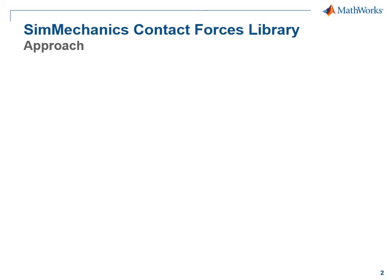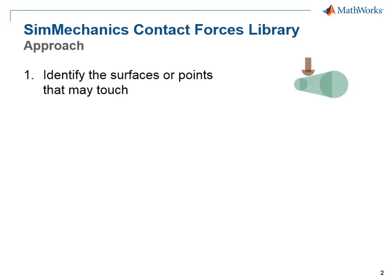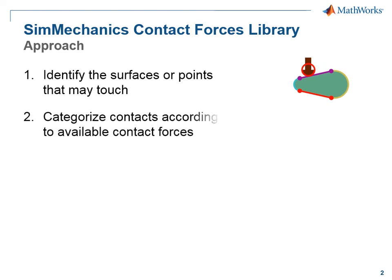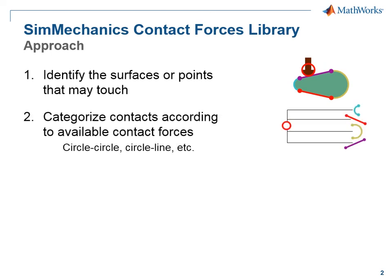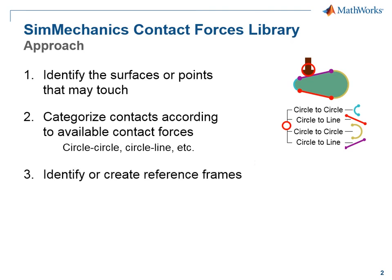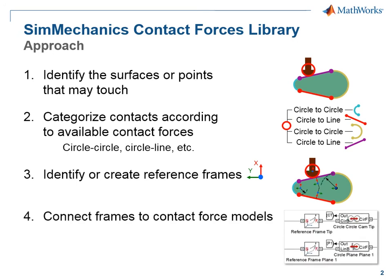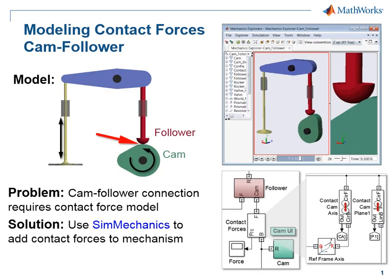Here is a summary of the approach we used to add contact forces to this model. First, we identified the surfaces or points that may touch — the circular profile of the follower encountered the profile of the cam on two circular profiles and two linear profiles. Next, we categorized the contacts according to the available contact forces, using circle-to-circle and circle-to-line to model the connection between the cam and the follower. Next, we identified or created reference frames for these portions of the profile. Here you can see the different reference frames added to the cam and follower to identify these different portions of the profiles. We then connected these frames to the contact force models, assigned parameters, and simulated. In this demonstration, we have seen how we can model a cam follower mechanism with contact forces.